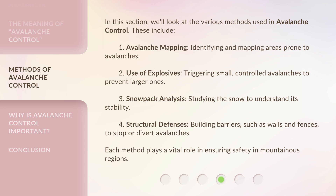In this section, we'll look at the various methods used in avalanche control. These include: 1. Avalanche mapping — identifying and mapping areas prone to avalanches. 2. Use of explosives — triggering small, controlled avalanches to prevent larger ones. 3. Snowpack analysis — studying the snow to understand its stability. 4. Structural defenses — building barriers, such as walls and fences, to stop or divert avalanches. Each method plays a vital role in ensuring safety in mountainous regions.